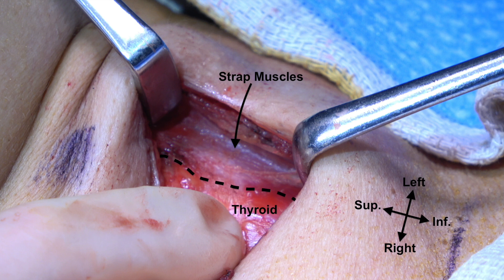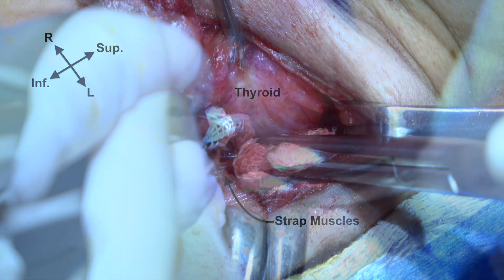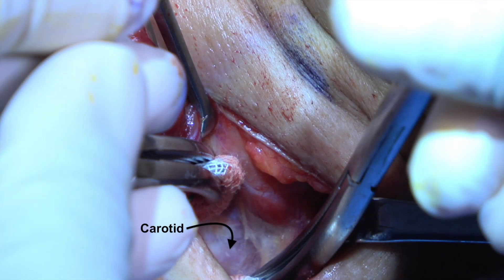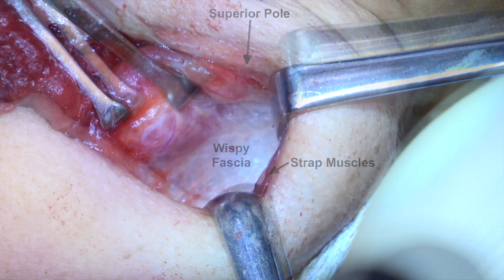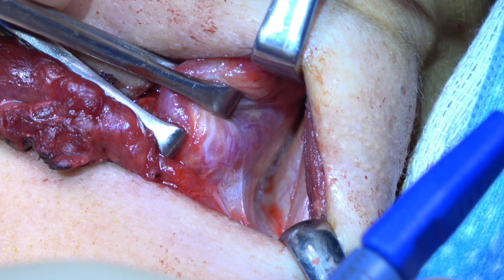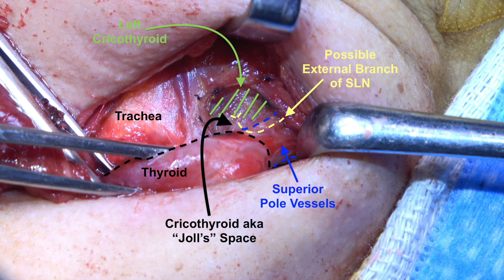Retractors are placed under the left strap muscles and kittners are used to brush the muscle off the gland until the carotid can be seen in the depth. The left thyroid is clamped and retracted inferomedially, exposing wispy fascia that is bluntly dissected. Pulling the gland inferolaterally exposes the cricothyroid and the superior pole vessels. To effectively ligate the superior pole, dissection occurs in the cricothyroid, also known as Joel's space, an avascular plane between the superior pole and cricothyroid muscles.